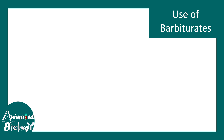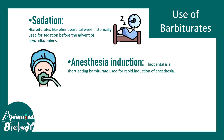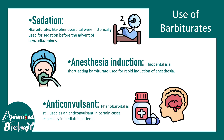Now let's talk about the usage of barbiturates. It could be used as a sedative — barbiturates like phenobarbital were historically used to sedate people. It can also be used in anesthesia; thiopental is a short-acting barbiturate used for rapid induction of anesthesia. There could also be usage of barbiturates as an anticonvulsant or seizure medication.